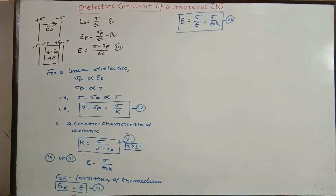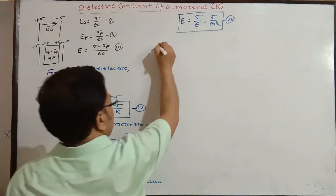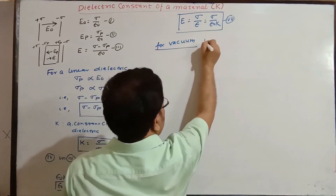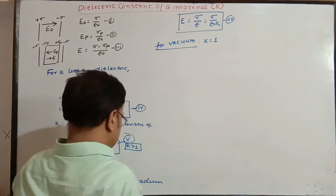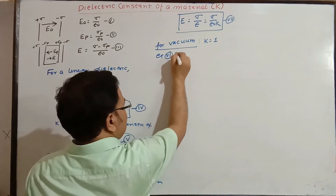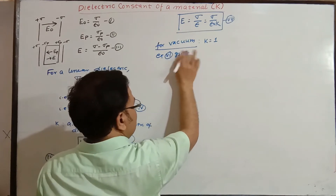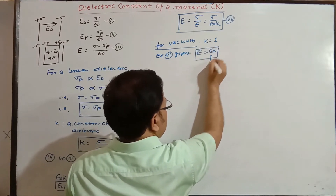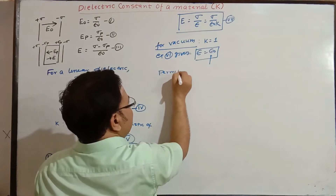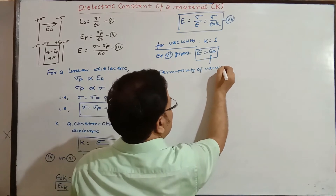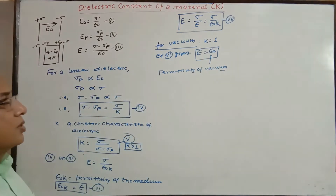From equation 7, if k is unity — that is, for vacuum, k = 1 — then equation 6 gives ε = ε₀. Here ε₀ is the permittivity of vacuum, which you have read in Coulomb's law in electrostatics.